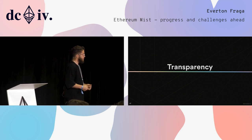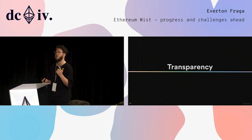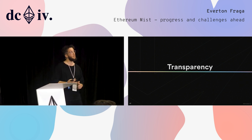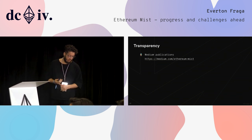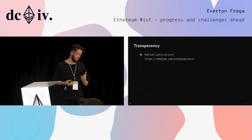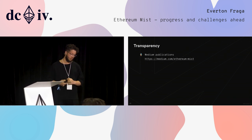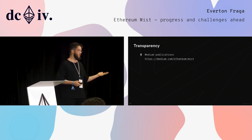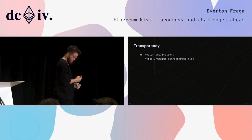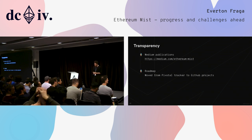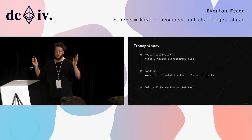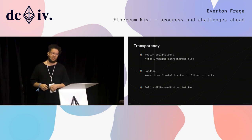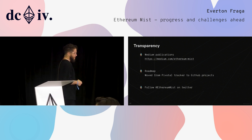A bit more about transparency. We got feedback saying our roadmap wasn't quite public — people sometimes wouldn't know exactly what we were working on. So we now have Medium publications; we've got one public post there and three more just about to be published. Our roadmap moved from a closed application to GitHub Projects. And today I created Ethereum Mist on Twitter — good that it was available. It has zero followers, but you can be the first.